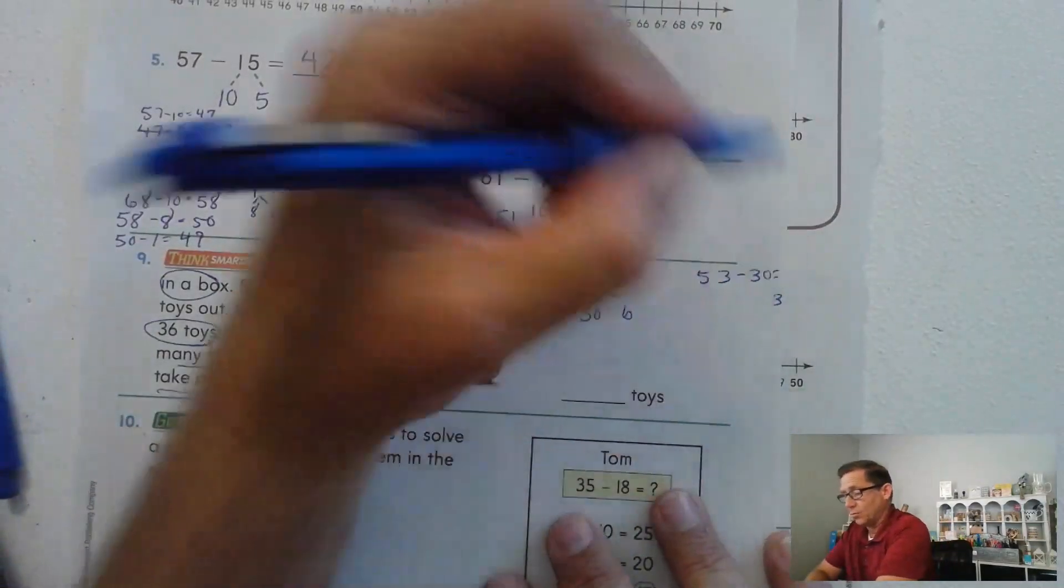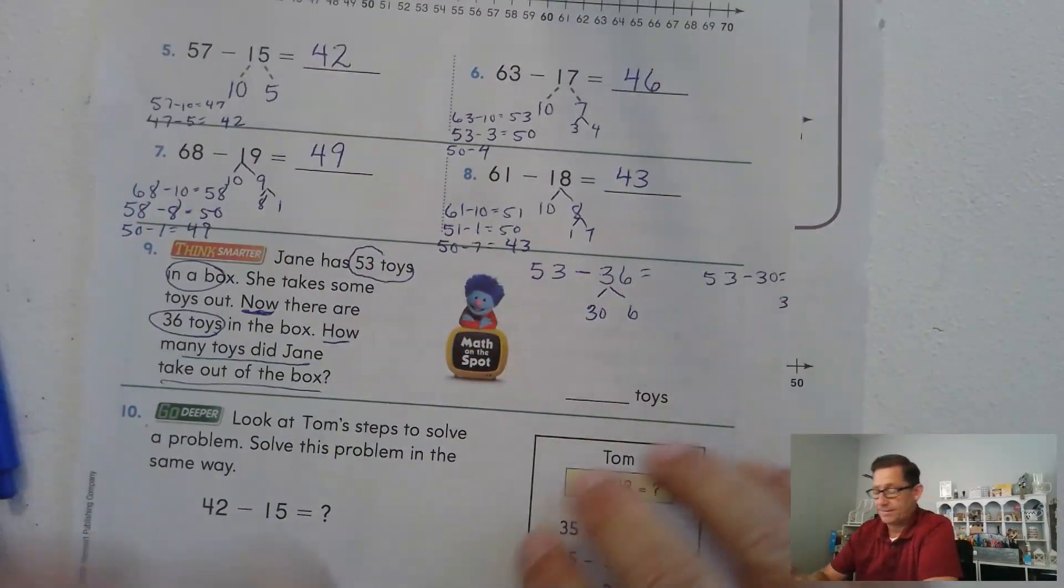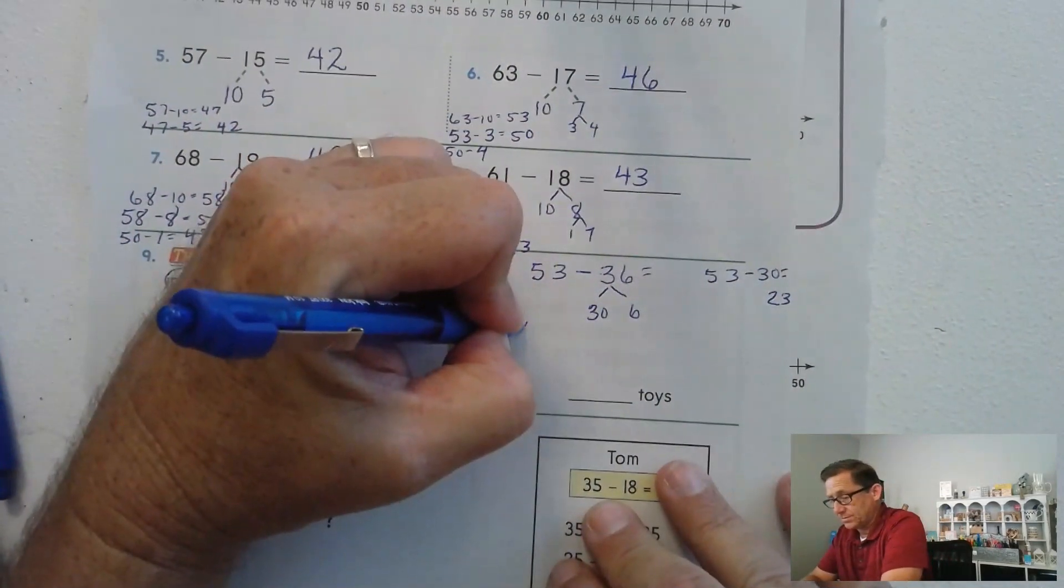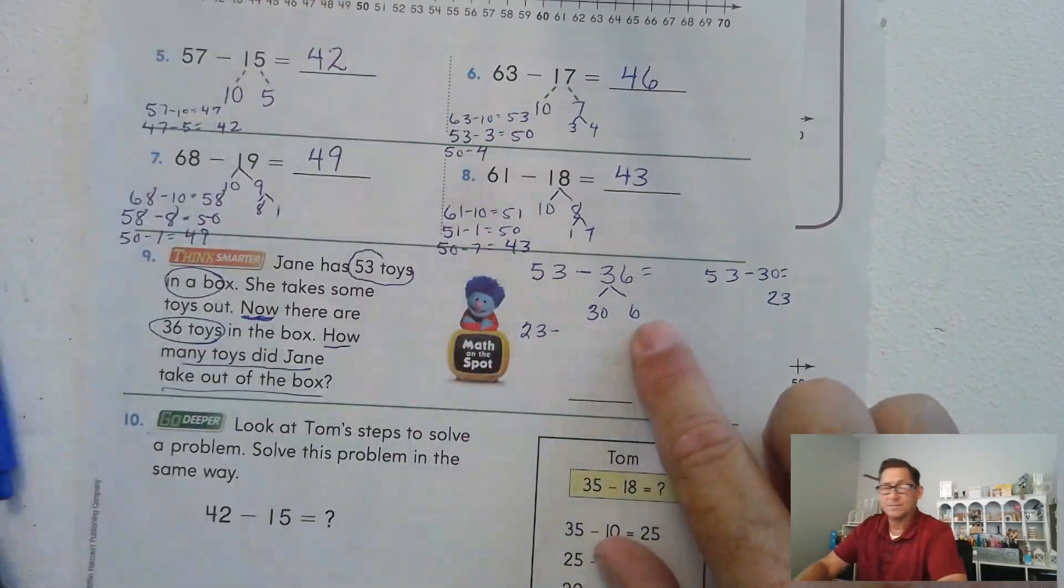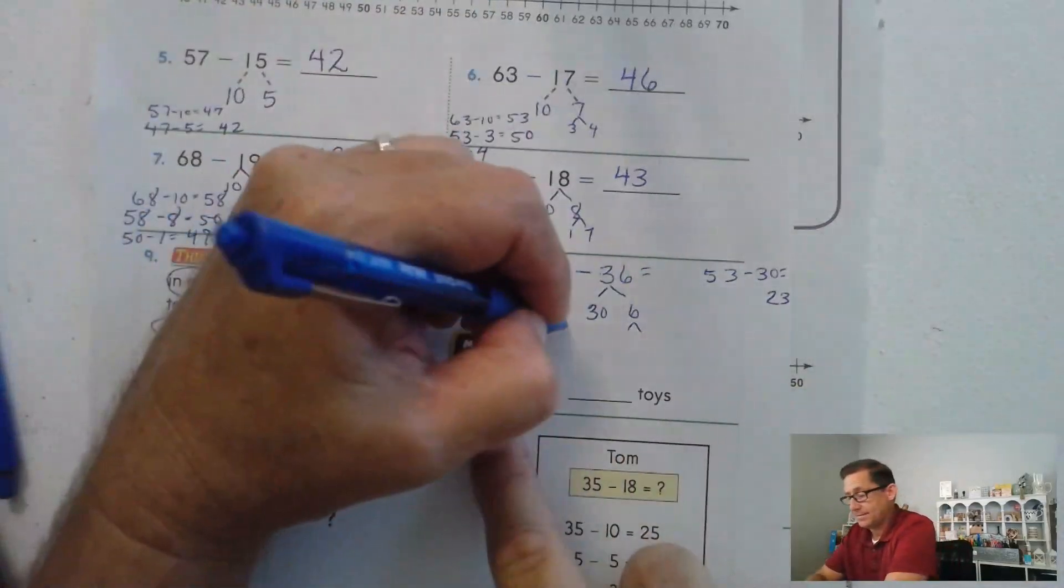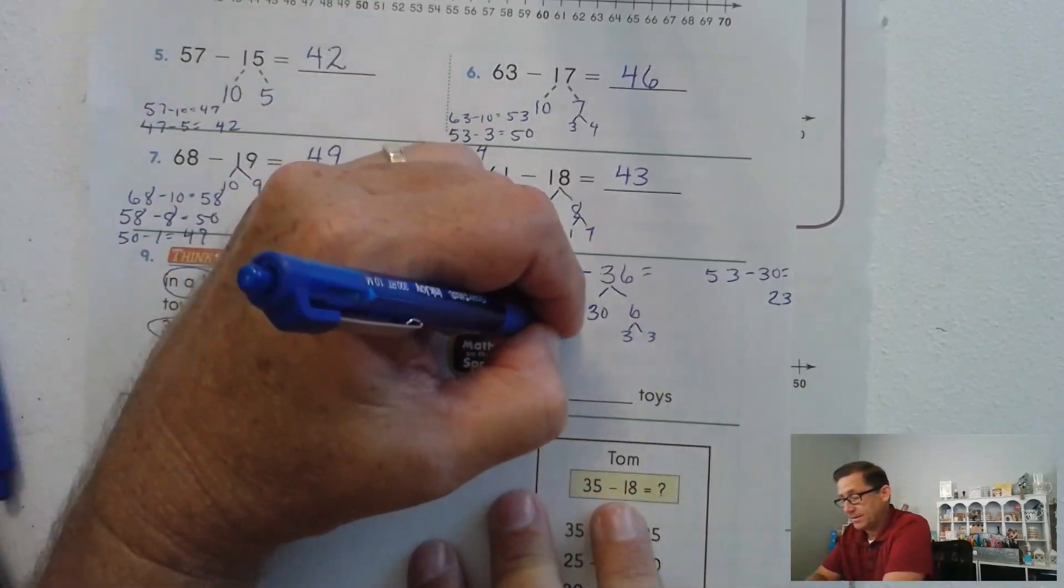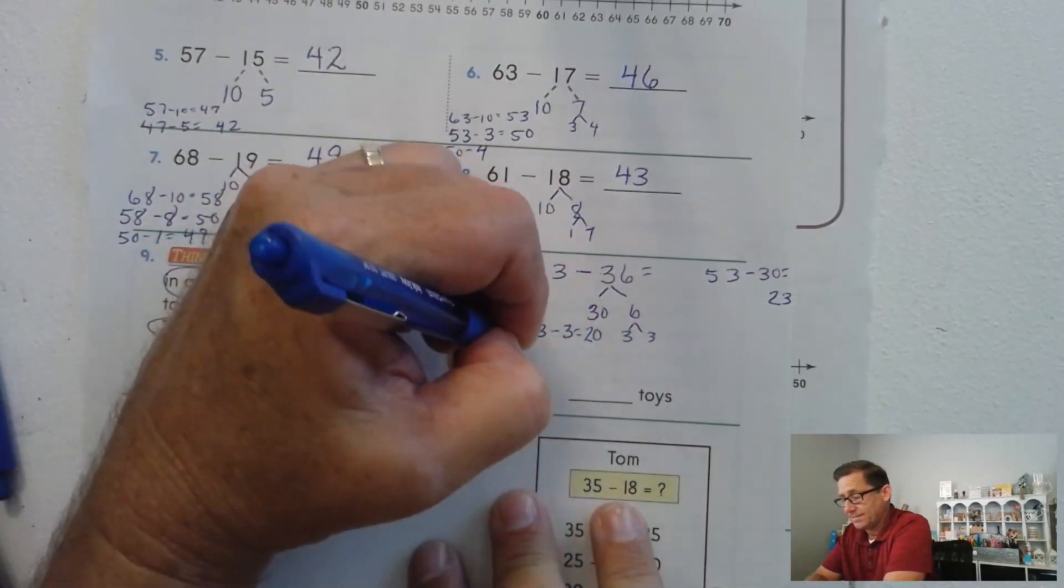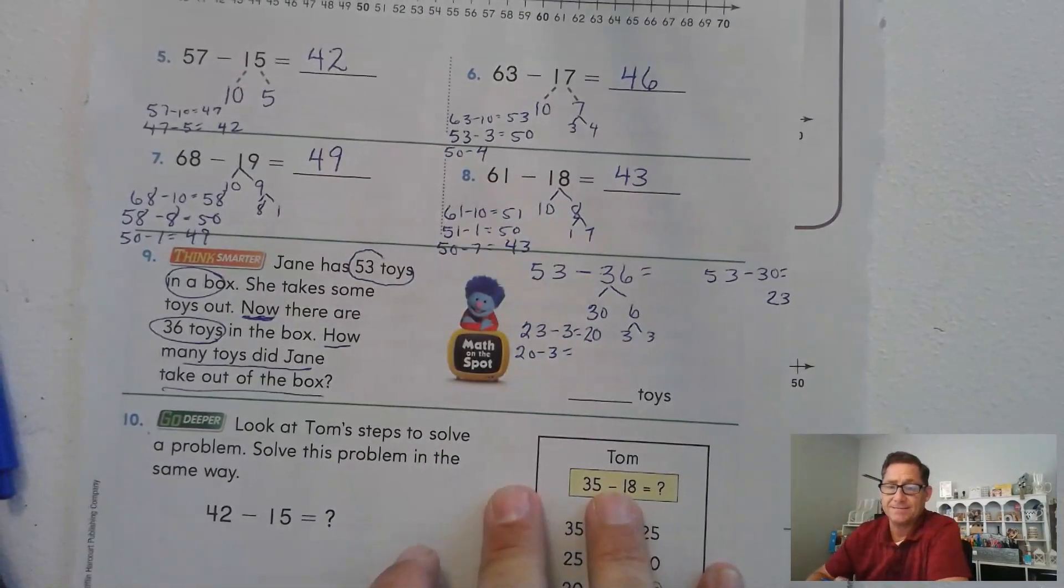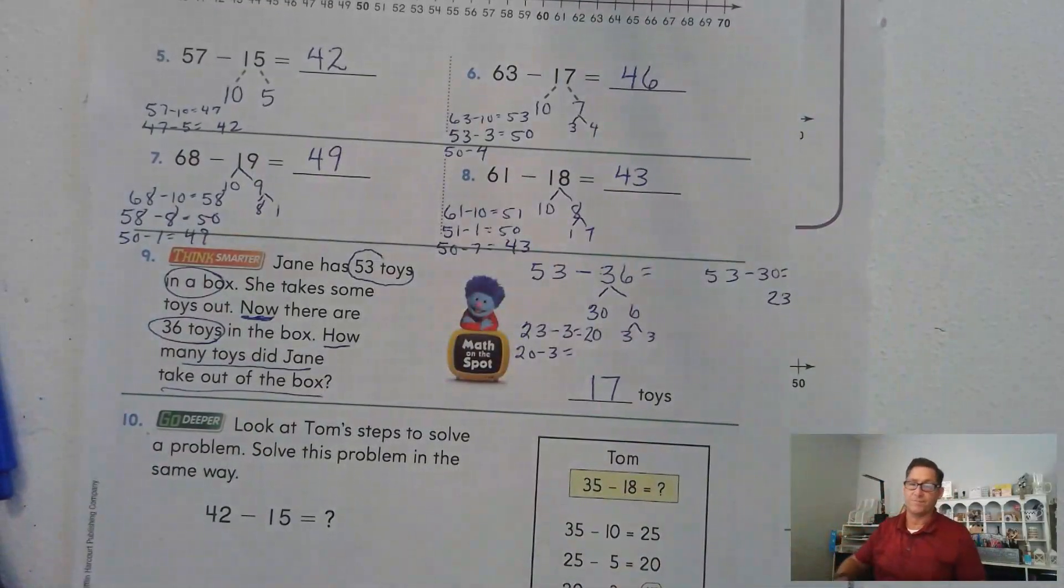Because we should be able to do 53 minus 30 in our head. Because the ones don't change. So 3 minus nothing is 3. 5 take away 3 leaves us 2. So we're at 23. What do we have to subtract from this 6 to make this into a 10? 3. So we're breaking 6 into 3 and 3. 23 minus 3 is 20. 20 minus 3: 20, 19, 18, 17. 17 toys were removed from the box.